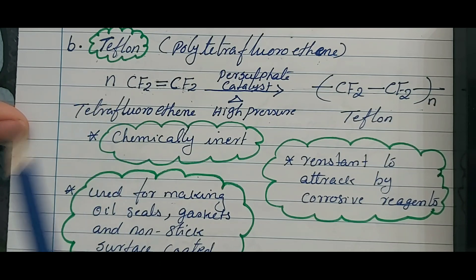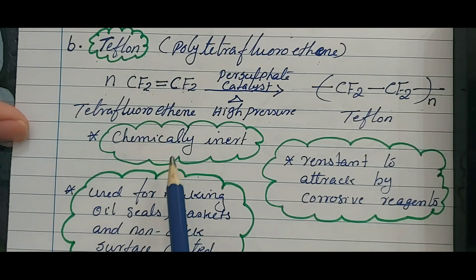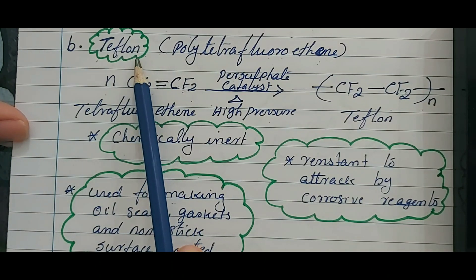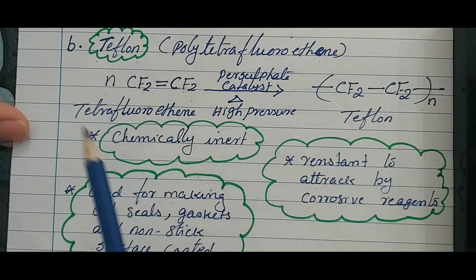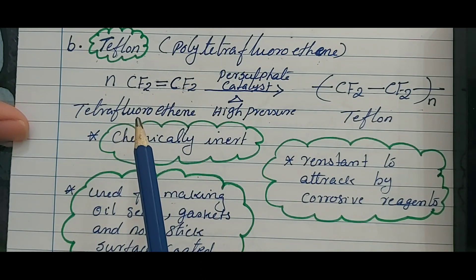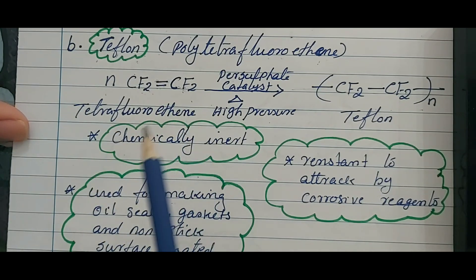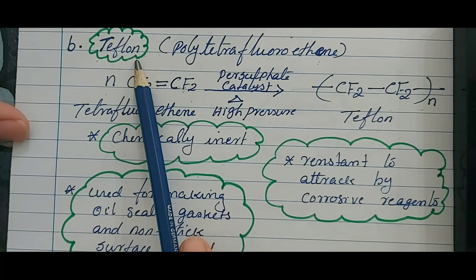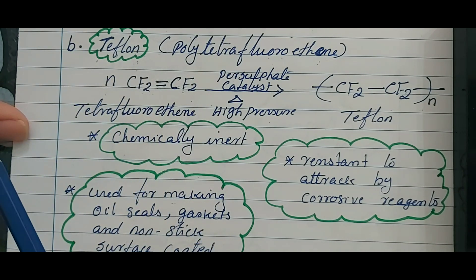Teflon is chemically inert. You know that the non-stick cookware has a black color coating — that is actually Teflon coated. There are also certain umbrellas with Teflon coating so water will not stick and just moves away.